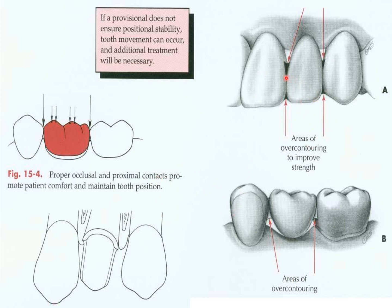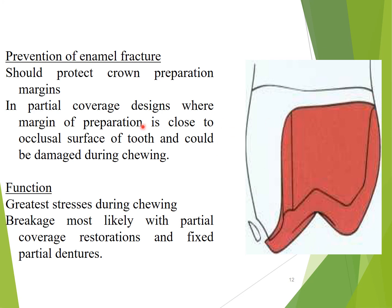As you can see in photos A and B, we are discussing over-contouring in the anterior and posterior regions, which will be covered in detail in later slides. Regarding prevention of enamel fracture — as visible in the photo — the provisional should protect the crown preparation margins and have proper coverage so it doesn't sustain damage during chewing. Breakage is most likely with partial coverage restorations and fixed partial dentures, which should be avoided by following all principles of proper provisional fabrication.